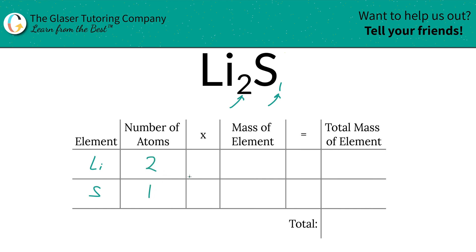Lithium, there's going to be two, sulfur, there's one. Then we're going to take both of those numbers, basically multiply it by the mass of each individual element.